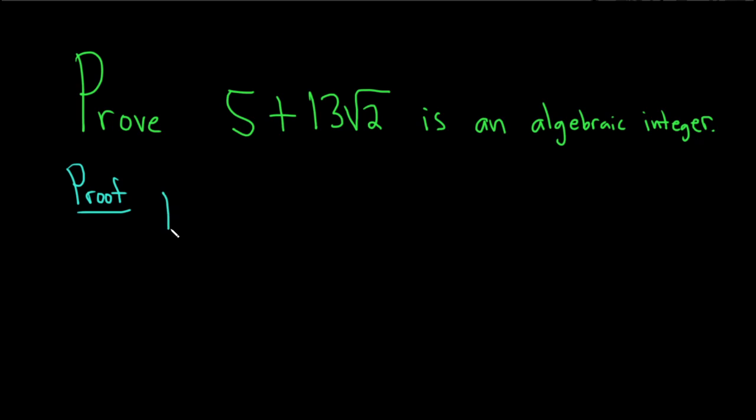So we're going to give a constructive proof. We'll let x be equal to the number, and then we will construct that monic polynomial for which this is a solution of.